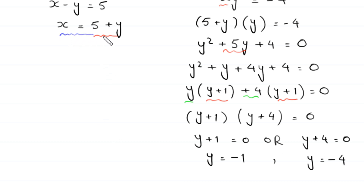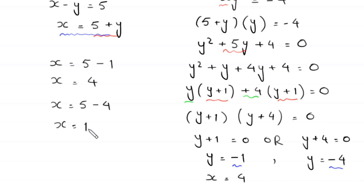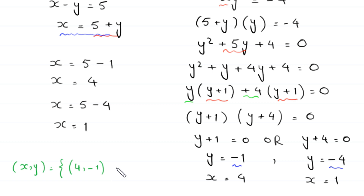Using x equals 5 plus y: when y equals negative 1, x equals 5 minus 1 equals 4. When y equals negative 4, x equals 5 minus 4 equals 1. So from Case 1 we get two pairs: x comma y equals 4 comma negative 1, and x comma y equals 1 comma negative 4.